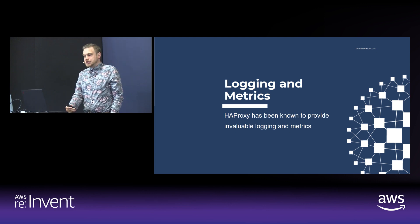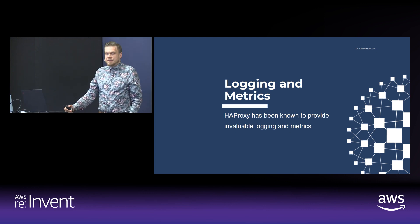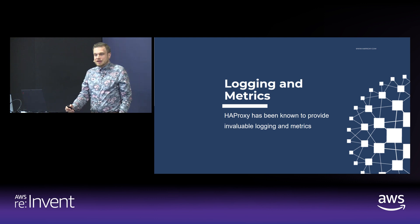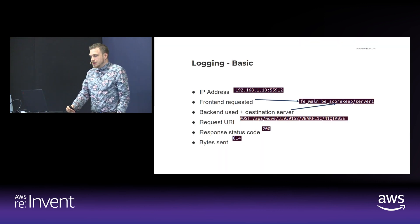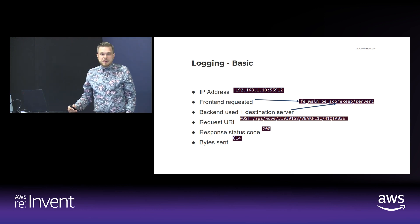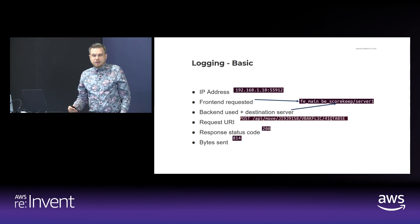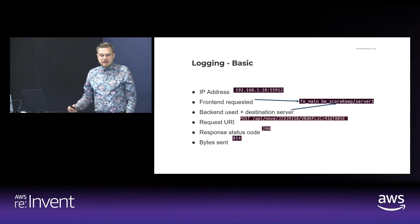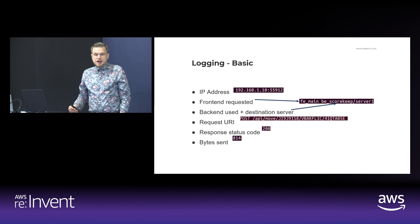Let's discuss the logging and metrics a bit. HAProxy has been known to provide invaluable logging and metrics in its default logs. Some of the basic log info you'll find within the default HTTP request log would be the client IP address, the front end that was requested, the back end and the destination server it was sent to, the request method and the request URI, the response status code, as well as the bytes that were transferred.